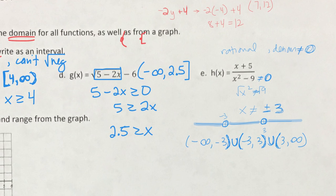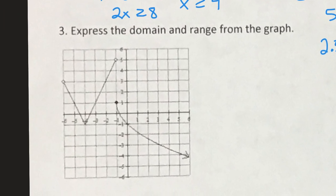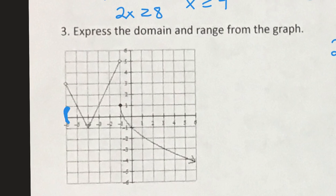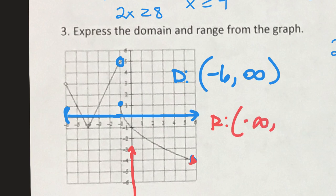For domain and range from a graph: negative 6 gets a parenthesis because it's an open hole. At negative 1 there's both an open and a closed hole, so we're good at that point, and the arrow means it goes on forever to the right — so the domain is negative 6 to infinity. For range, we read bottom to top: starting from negative infinity, going up to positive 5, and since there's a closed dot at 3 it's included, giving negative infinity to positive 5.